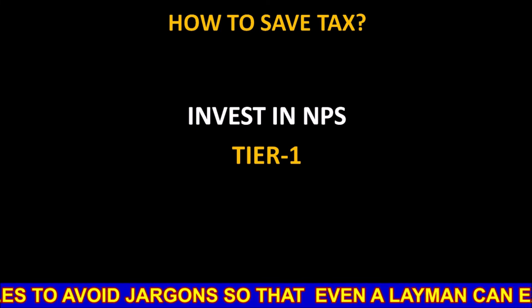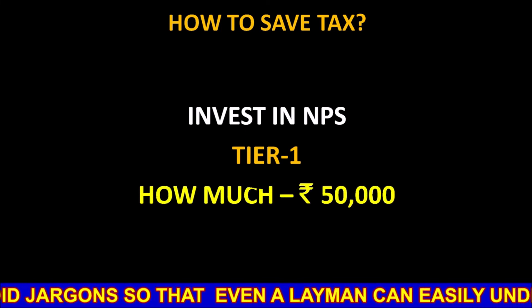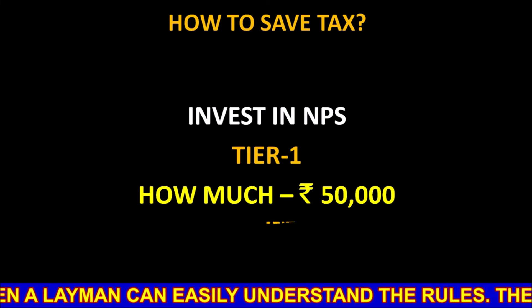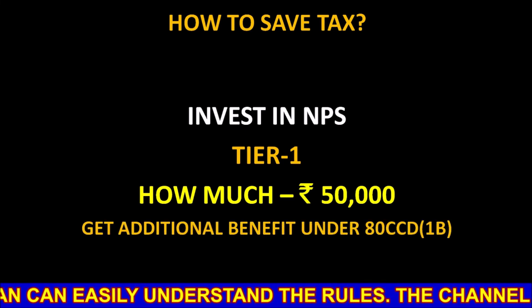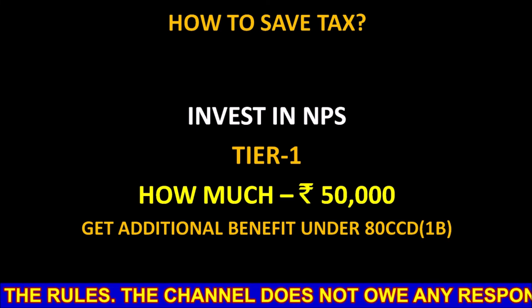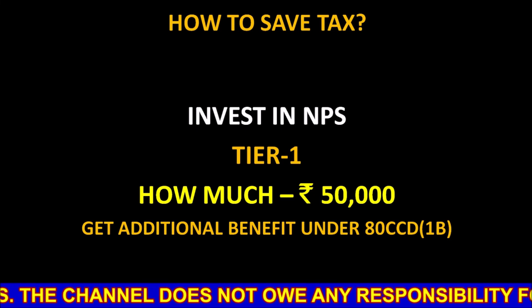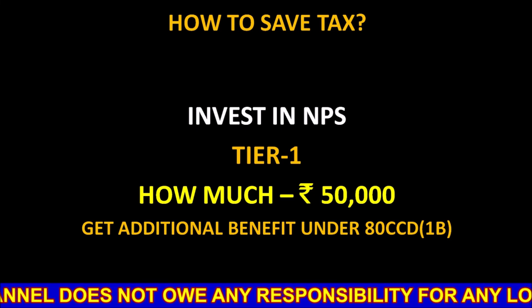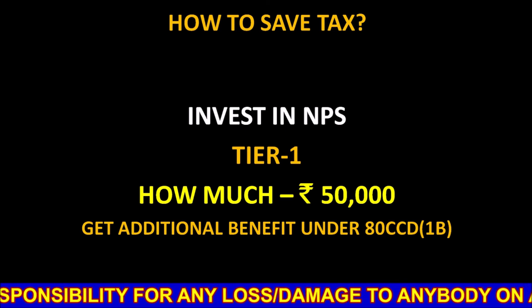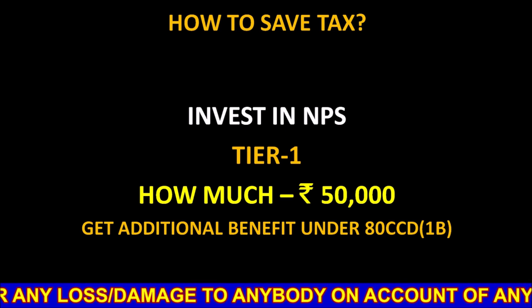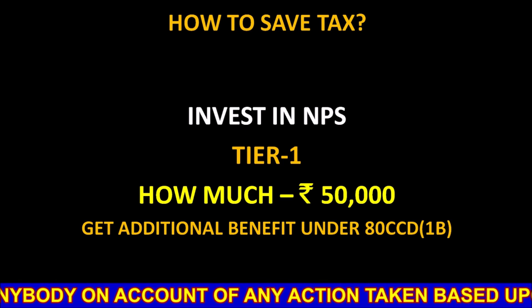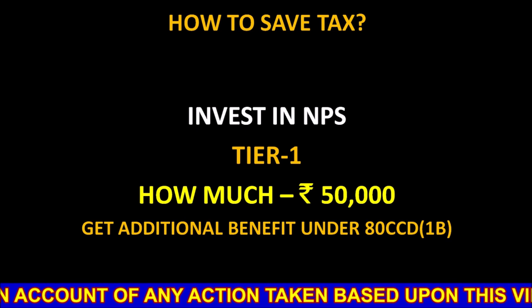You have to contribute in NPS Tier 1. You can contribute around 50,000 rupees. You will get additional benefit under Section 80CCD(1B). This is in addition to your amount of 1,50,000 which you contribute under 80CCD. So if you contribute in NPS, you will get an additional tax benefit of rupees 50,000. This is how you can save your tax.